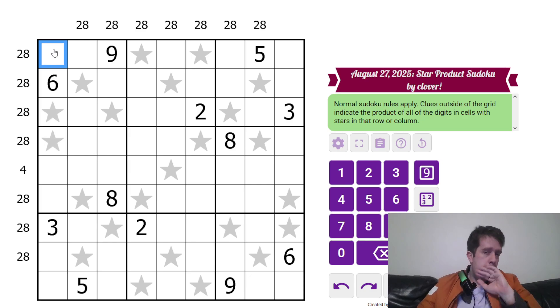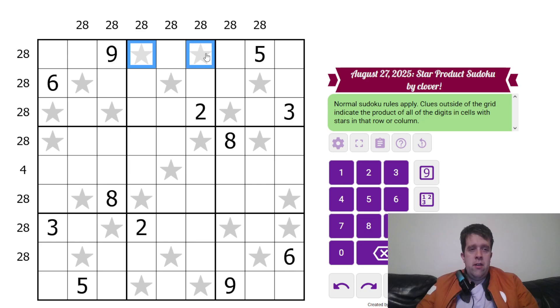Now, pardon me. Clues outside of the grid indicate the product of all digits in cells with stars in that row or column. Now, what that means is this cell and this cell must multiply to give a product of 28. These three cells must also multiply to give a product of 28. This one, however, must multiply to give four.